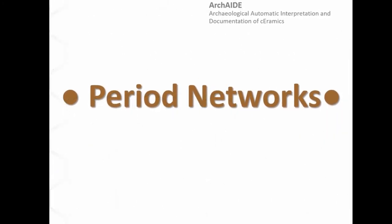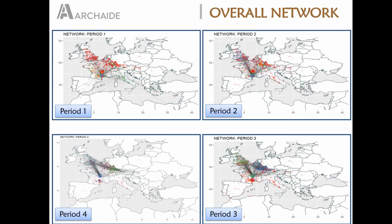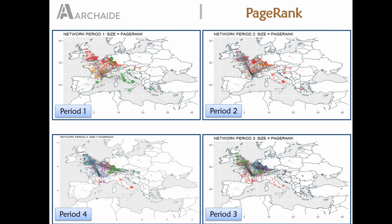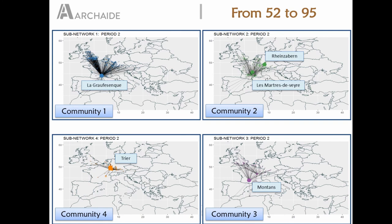To conclude, we started working with network detection for each different period to understand how production changes. This is the general overview of all the networks in four different periods, both with the application of community detection algorithms and the PageRank algorithm, allowing visualization of the different steps of production with the main sites across four periods.